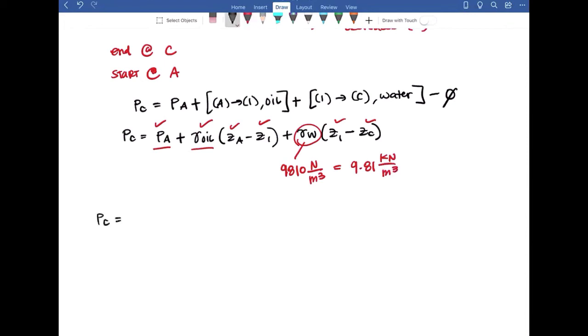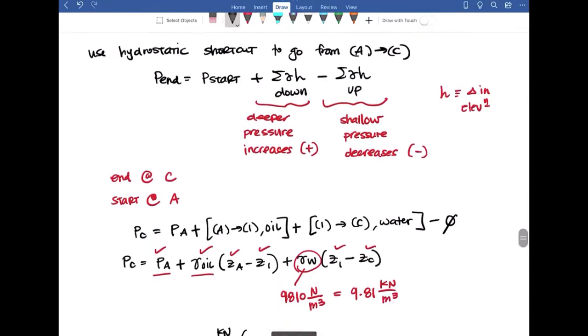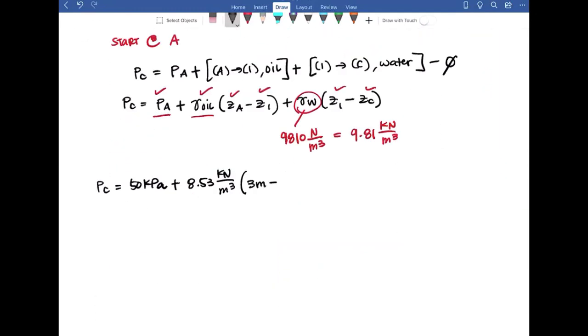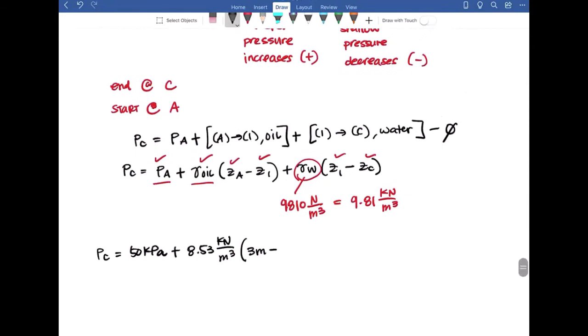So PC is equal to PA is 50 kilopascals. Gamma oil is 8.53 kilonewtons per meter cubed, multiplied by ZA, which we already have up here labeled. ZA is 3 meters minus Z1, and Z1 is 1.5 meters, plus 9.81 kilonewtons per meter cubed, multiplied by 1.5 meters minus ZC, which is 0.5 meters.